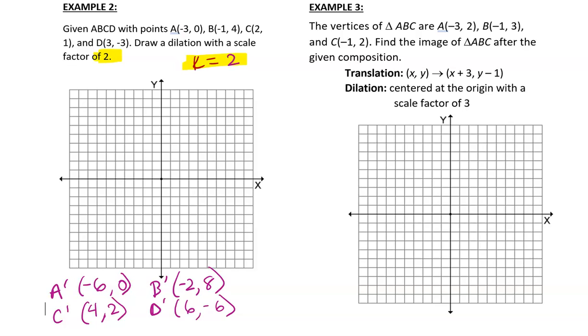So negative 6, 0, 3, 4, 5, 6. That's A prime. Negative 2, 8. 4, 2, 3, 4. Now, if you really want to see it grow, you can also plot your first one. 1, 2, 3, 4, 5, 6. So D prime. So it's just a quadrilateral. So if you want to plot the first one, you can, and you should see it growing. Basically, each coordinate is a factor of 2.